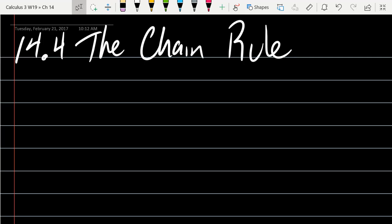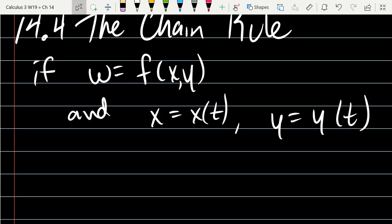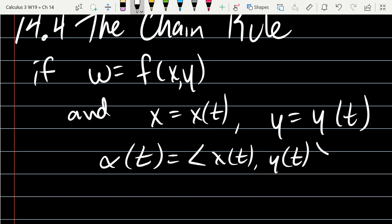So we're going to start out with a chain rule with w as the output of the function f. And we're going to let x be a function of t, y is going to also be a function of t, where α(t) is going to be <x(t), y(t)>.